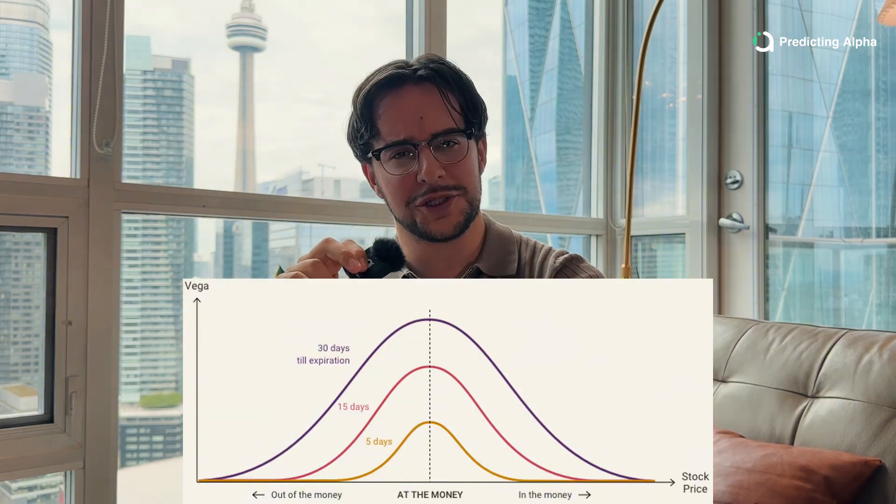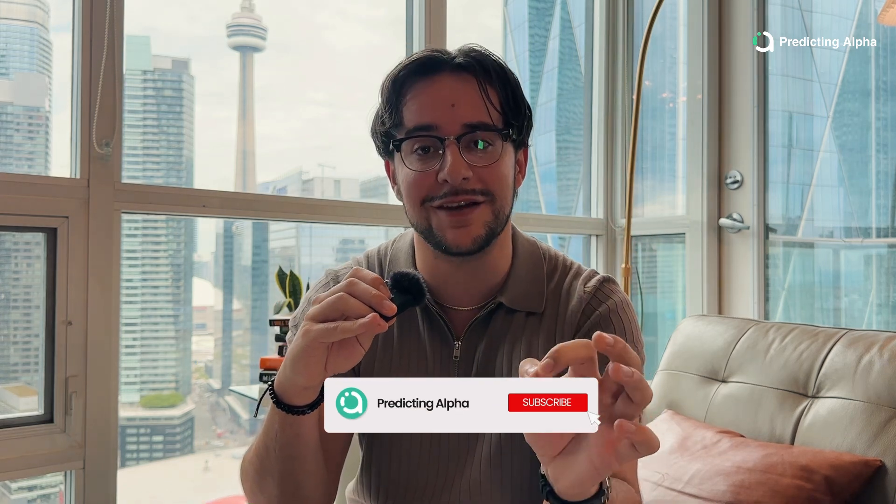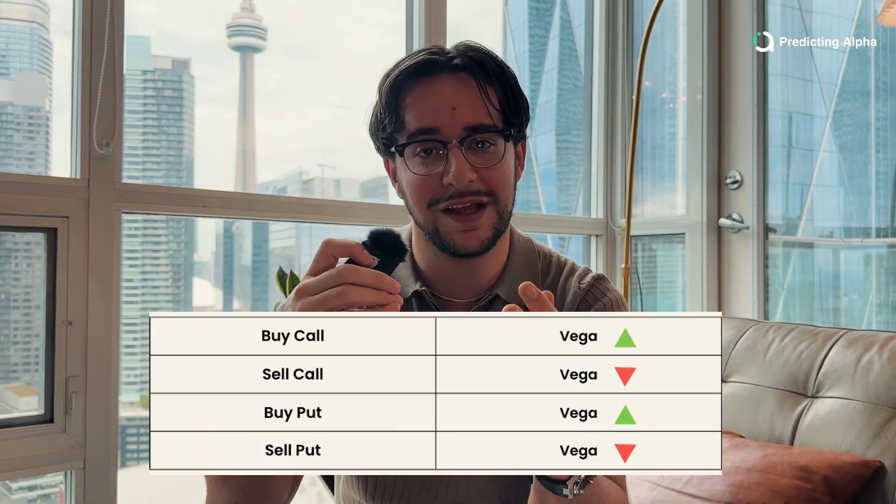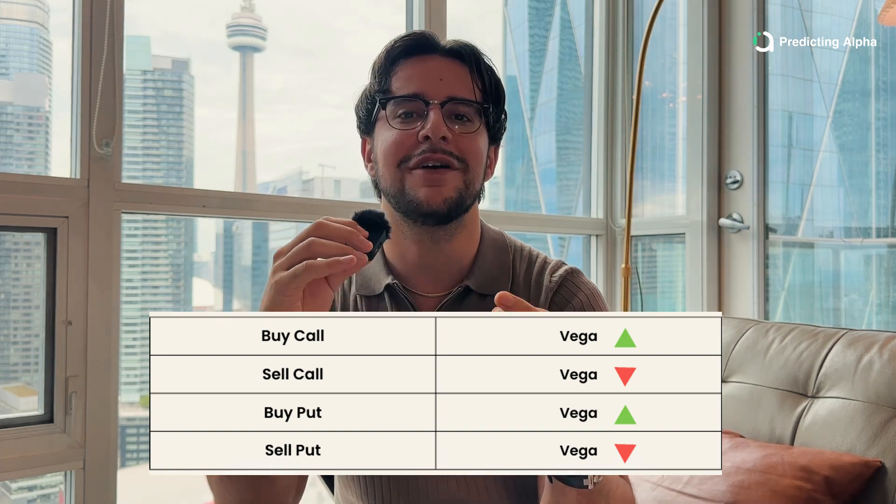Vega measures your sensitivity to implied volatility. If your option position has a Vega of 0.25 and implied volatility increases by just 1%, you will see a 25-cent change in the value of your option. When you're buying options — long calls, long puts — you have positive Vega. When you're selling options — short puts, short calls — you have negative Vega. Vega is highest for longer-dated options that are at the money. If you think volatility is going to increase, buy longer-dated options; if you think it will contract, sell them.